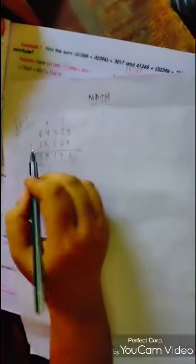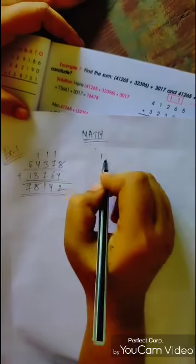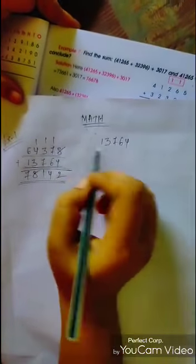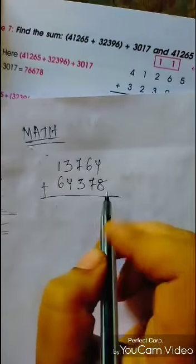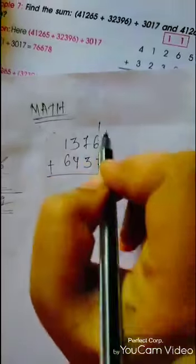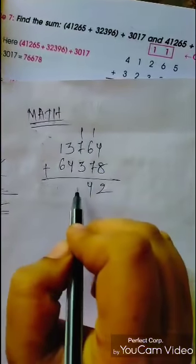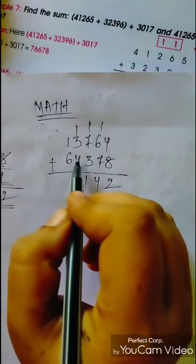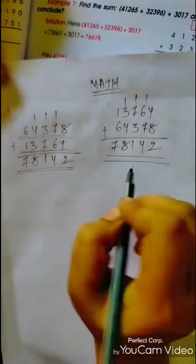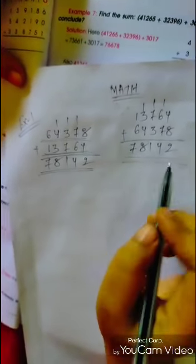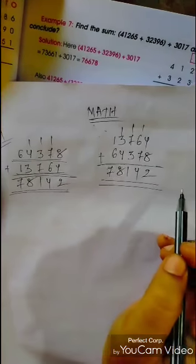Now we alternate this — the second number becomes first and the first becomes second. So now we have 13,764 plus 64,378. We add: 4 plus 8 is 12, write 2, carry 1. 1 plus 6 is 7, 7 plus 7 is 14, write 4, carry 1. 1 plus 7 is 8, 8 plus 3 is 11, write 1, carry 1. 1 plus 3 is 4, 4 plus 4 is 8. Then 1 plus 6 is 7. My dear students, look carefully — the first answer and the second answer are the same. If we alternate the numbers, the answer is the same.